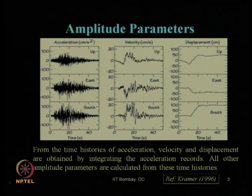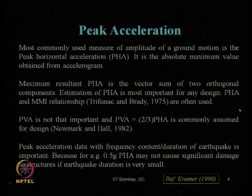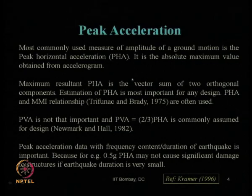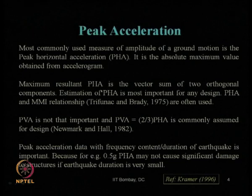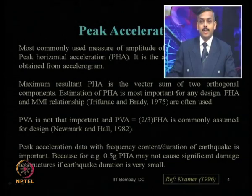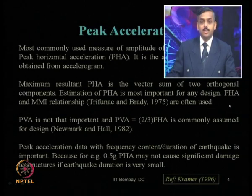We learned about the amplitude parameters of an earthquake, such as acceleration, velocity, and displacement records with respect to time. We discussed how to define the peak value of acceleration — PHA, peak horizontal acceleration — which has two orthogonal components in the north-south and east-west directions. The maximum resultant PHA is taken by the vector sum of those two orthogonal values. Trifunac and Brady in 1975 proposed the relationship between PHA and the Modified Mercalli Intensity (MMI) scale.